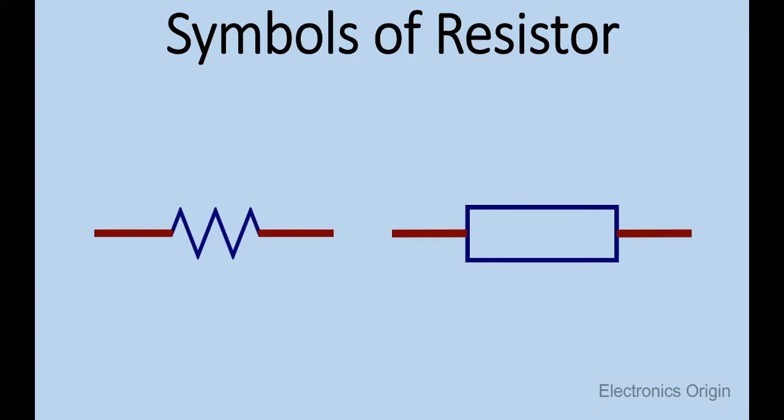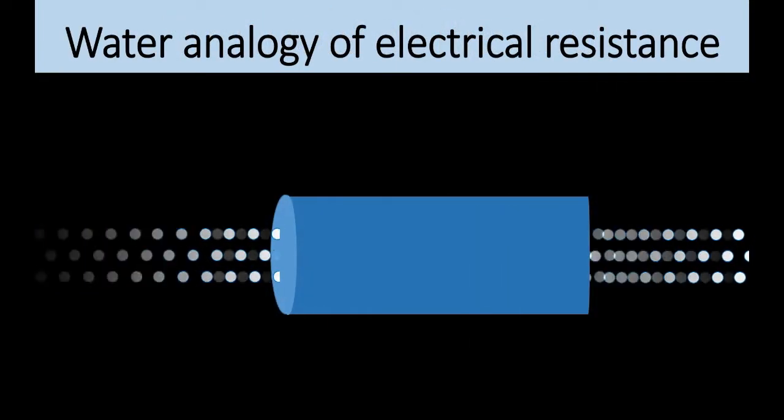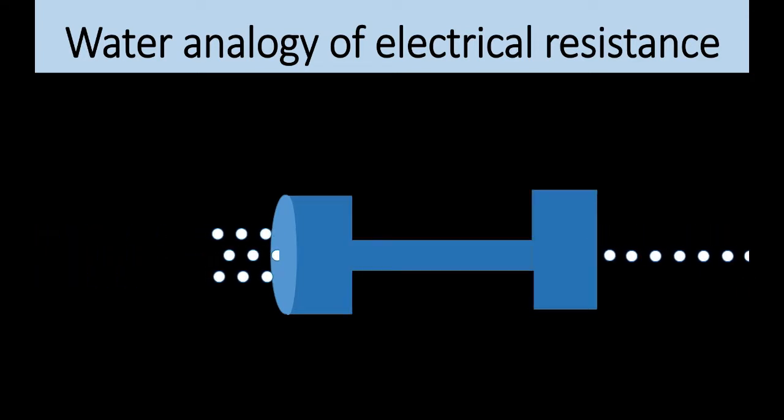To explain the definition more clearly, we use the example of water that flows through a tube. The flow of water is similar to the electrical current in an electrical circuit. If we create a resistance in the flow of water the current will reduce. We can do this for example by making the tube more narrow at a certain place.